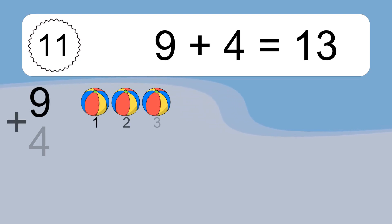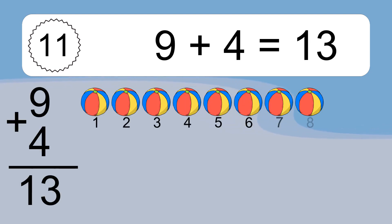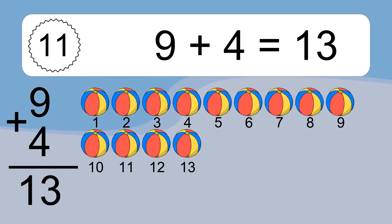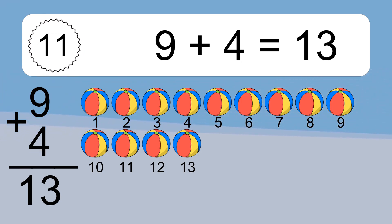9 plus 4 equals what? 9 plus 4 equals 13. Let's count it: 1, 2, 3, 4, 5, 6, 7, 8, 9, 10, 11, 12, 13.